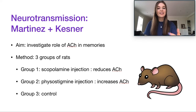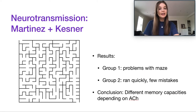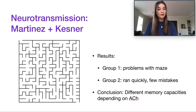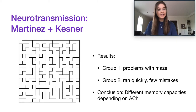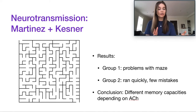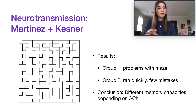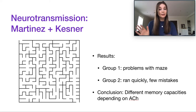Group one, who received scopolamine and had reduced acetylcholine, had problems finding their way through the maze and made more mistakes. Group two, who had more acetylcholine, ran quickly through the maze with very few mistakes — they were even quicker than the control group. That's why the control group is important: it shows group two wasn't just outperforming an already impaired group, but was actually performing better than what we'd expect to be normal.